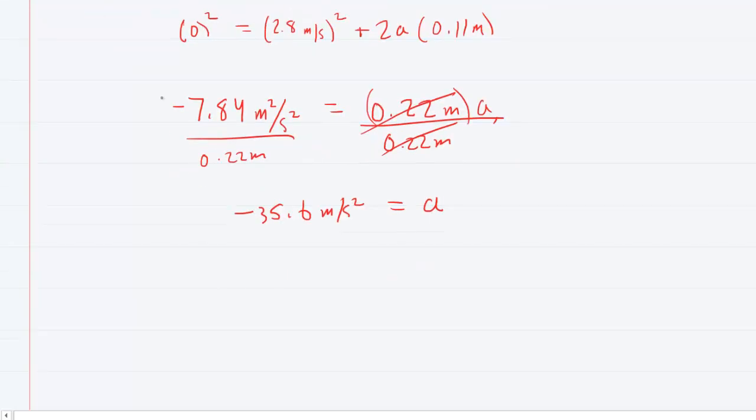We want the tension. We recall from Newton's second law that the net force acting on the fish would equal its mass times its acceleration. The net force we're assuming is just the tension. It's the only force pulling back on the fish that's causing this acceleration. So we're going to say T equals mass times acceleration.